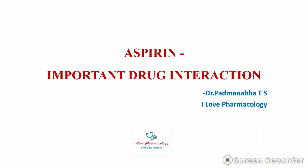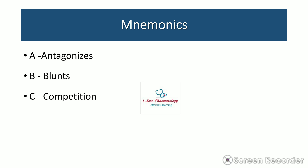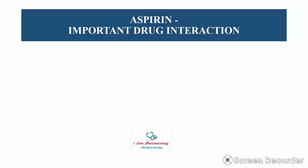Welcome to I Love Pharmacology. Today we'll look at aspirin's important drug interactions. I am Dr. Padmanabha TS. To remember the drug interactions with aspirin, use the mnemonic ABCDE: A stands for Aspirin Antagonizes, B for Aspirin Blunts, C for Aspirin Competes, D for Aspirin Displaces, and E for Aspirin limits Excretion. Let's go through each interaction.